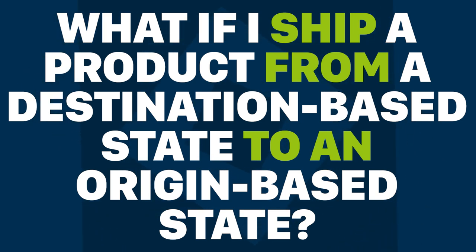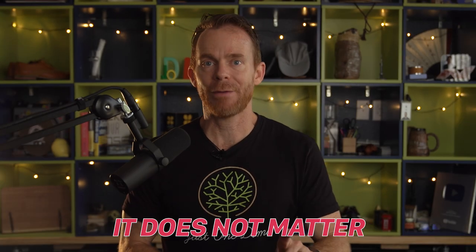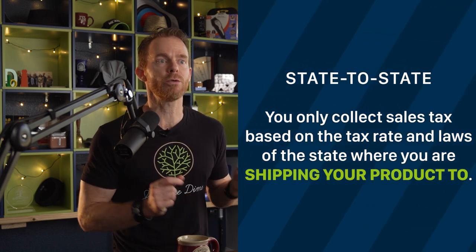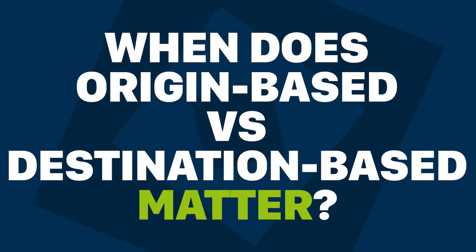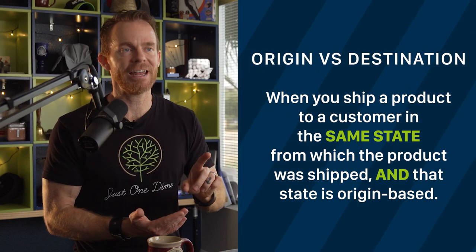However, what if you ship a product from a destination based to an origin based state? Let's say you are shipping from Ohio, destination based, to Arizona, origin based. If you have nexus in Arizona, then you're only going to collect tax based on the tax rate of the location in Arizona where your product ships from — such as an Amazon Fulfillment Center. Notice: it does not matter if the state you are located in is destination or origin based. You only collect sales tax based on the tax rate and laws of the state where you are shipping your product to. When does origin based versus destination based matter? When you ship a product to a customer in the same state from which the product was shipped, and that state is origin based.